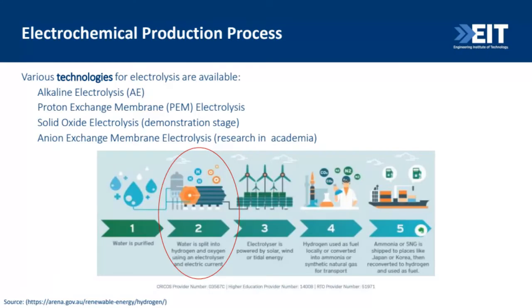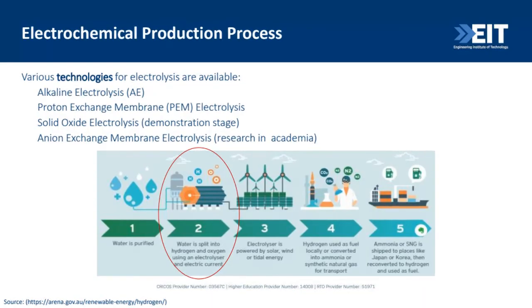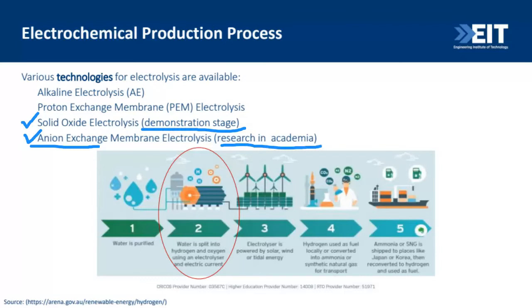In electrochemical production, there are mainly four types classified by the electrolyte used. The first is alkaline electrolysis, the second is proton exchange membrane (PEM) electrolysis, the third is solid oxide electrolysis, and the fourth is anion exchange membrane electrolysis. The third and fourth are not yet at commercial stage — solid oxide electrolysis is in the demonstration stage, and the fourth is still in academic research. Today I will focus on the first two.